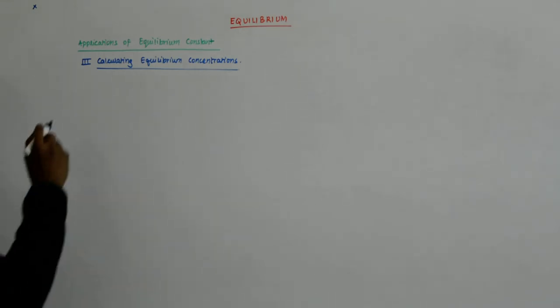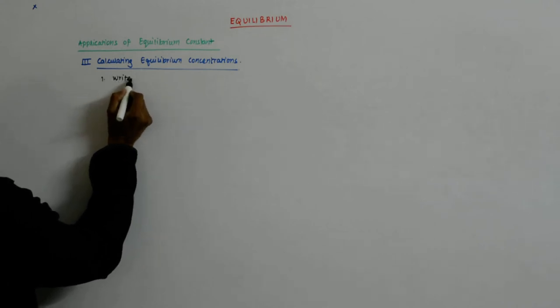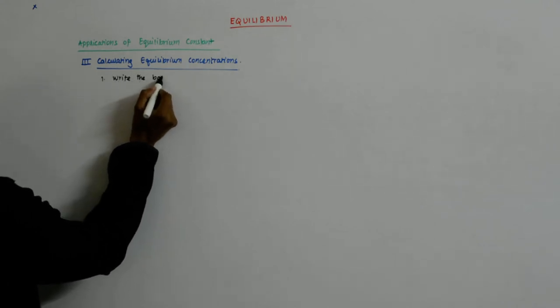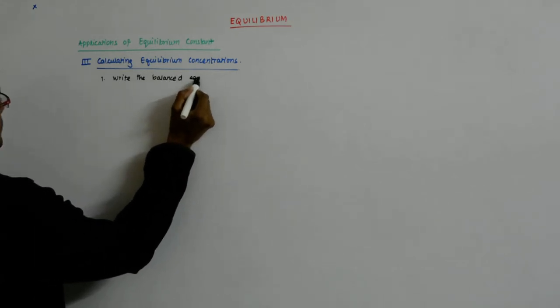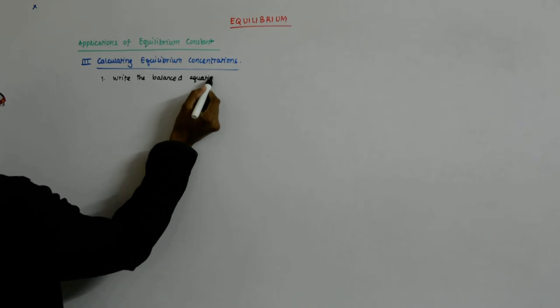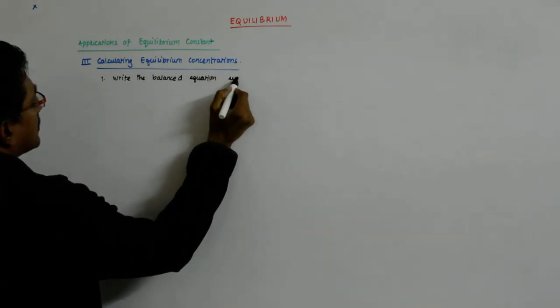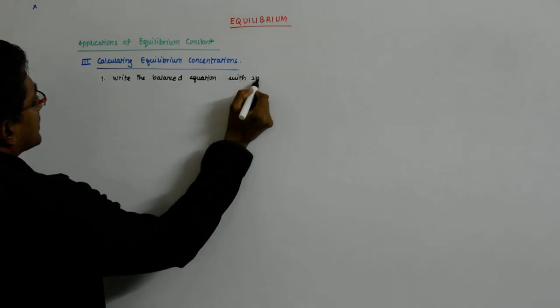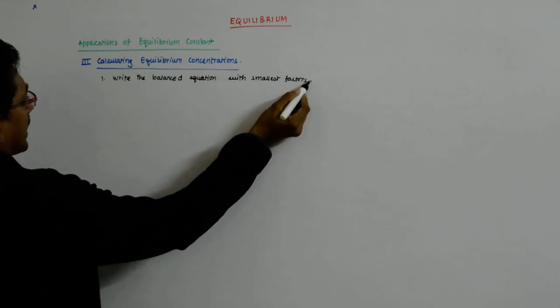So the first thing is that we would write the balanced equation. Write the balanced equation the way it is written, with smallest factors. Otherwise things will change, we know that.